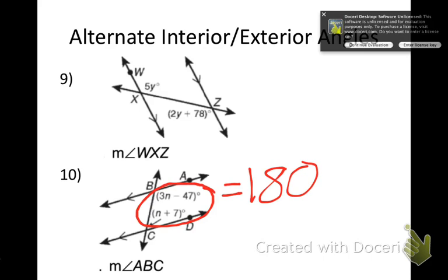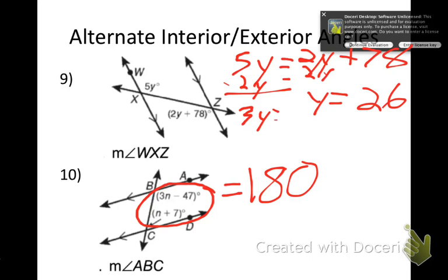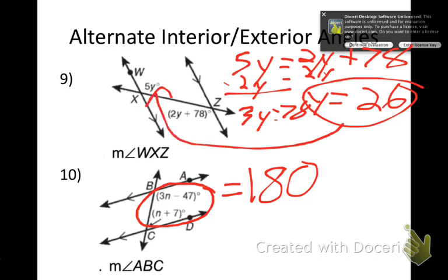Number 9: you set those equal to each other, so 5Y = 2Y + 78. You subtract 2Y to get 3Y = 78, and then Y equals 26. Plugging back in: 5 times 26 gives an angle of 130 degrees.